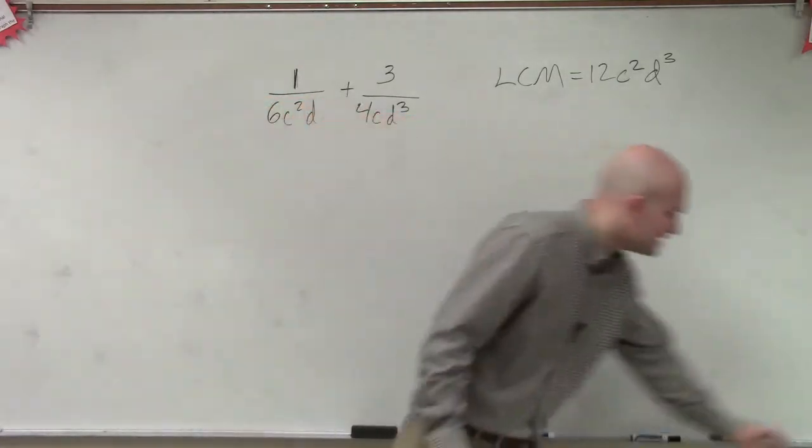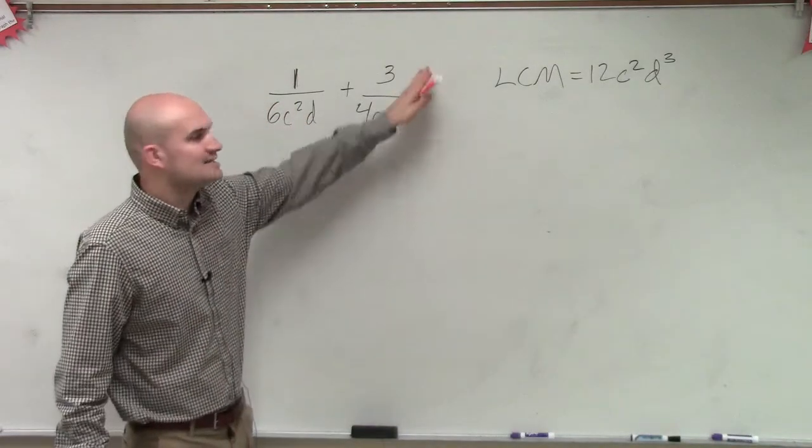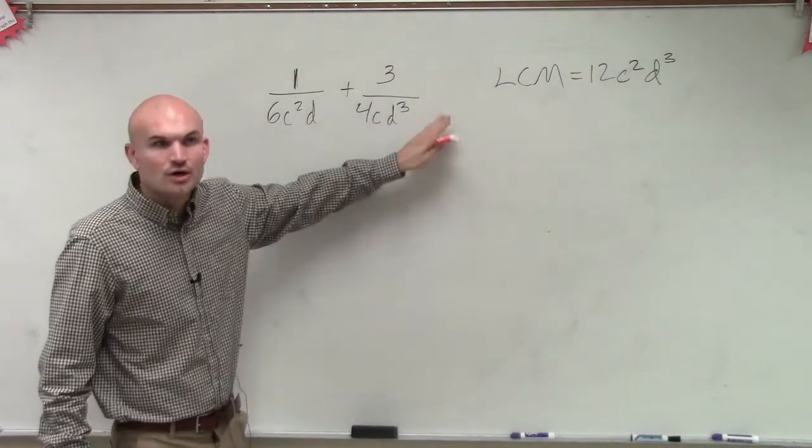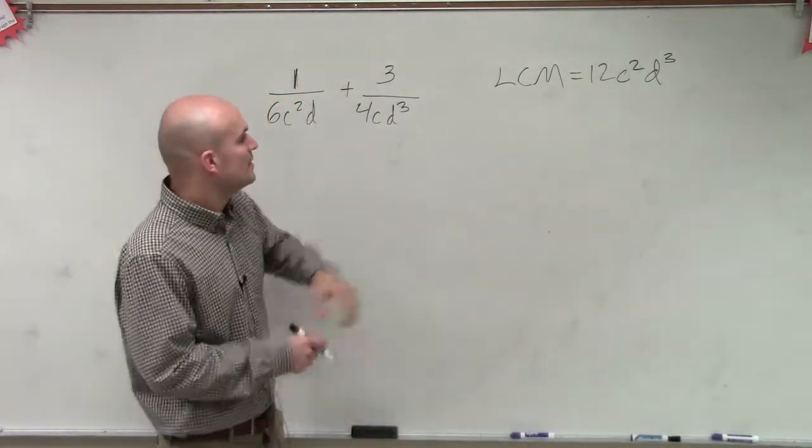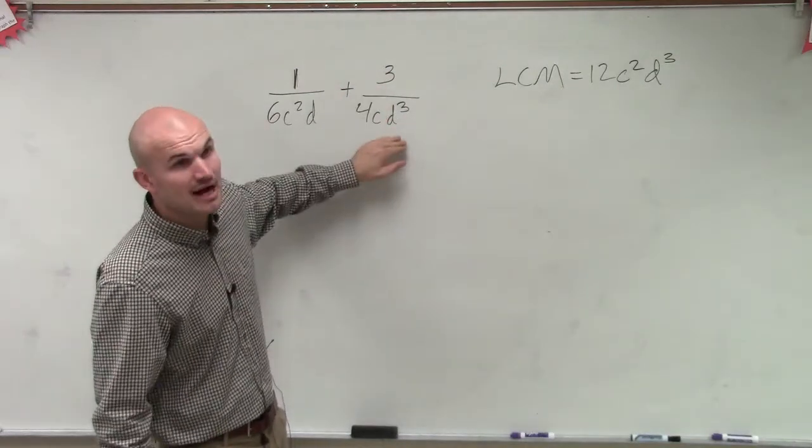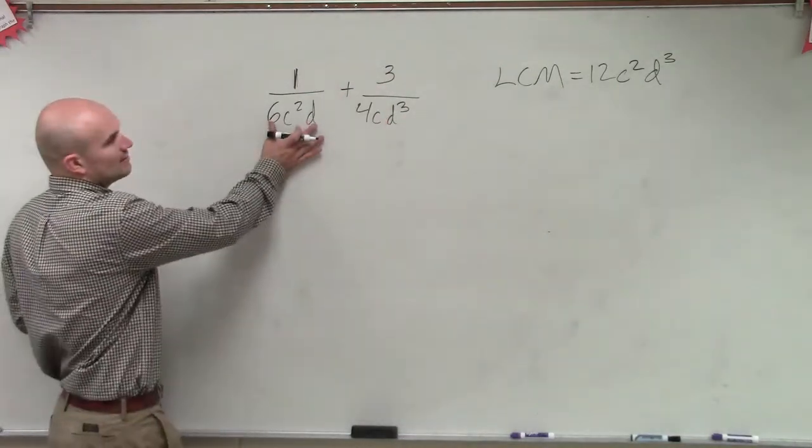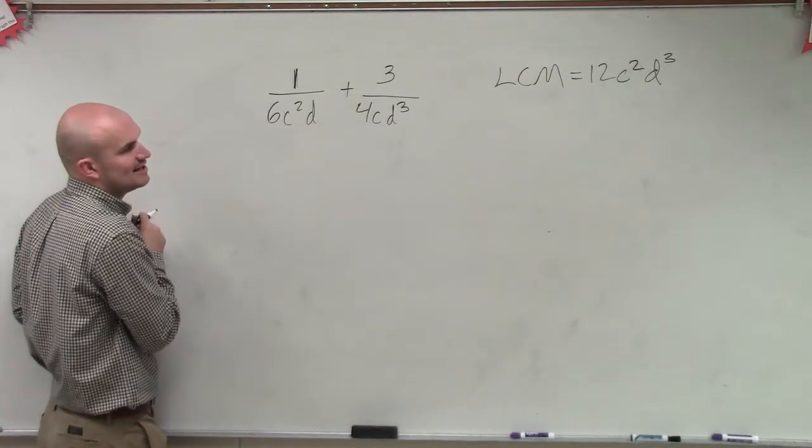So now what we do is, we take our LCM, and we multiply it on the top and the bottom of each fraction. I'm sorry, we don't have to multiply by it. We could, but we don't have to do it that way. What we want to do is, now we just want to see, what do I need to multiply each fraction by to get it to its LCM? All right, so over here,